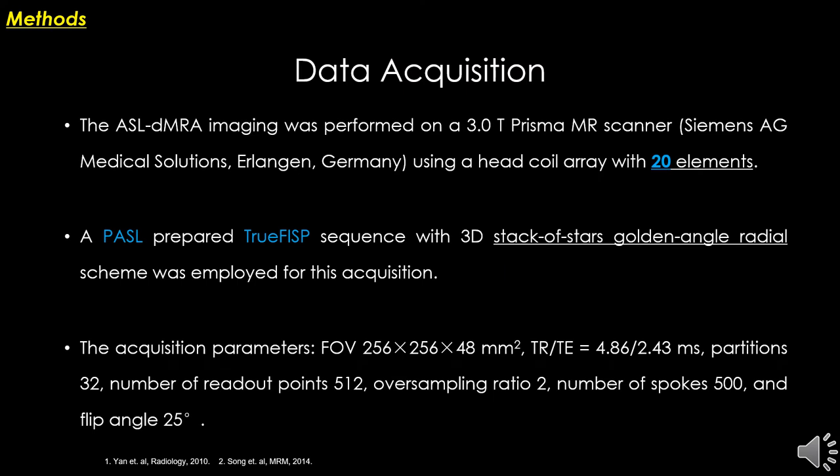In this work, the ASL-based dynamic MRI imaging was performed on a 3T Prisma MR scanner using a 20-element head coil array. A puzzle-prepared true phase sequence was employed for this acquisition. The relevant parameters are as follows.